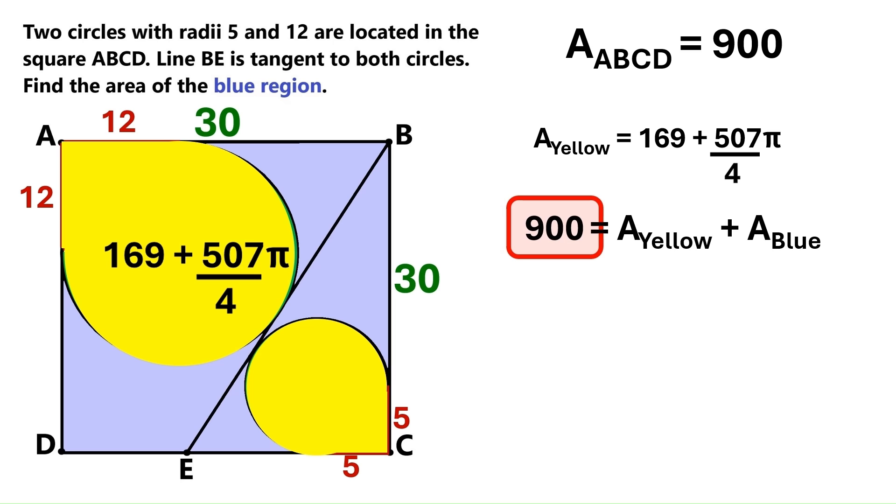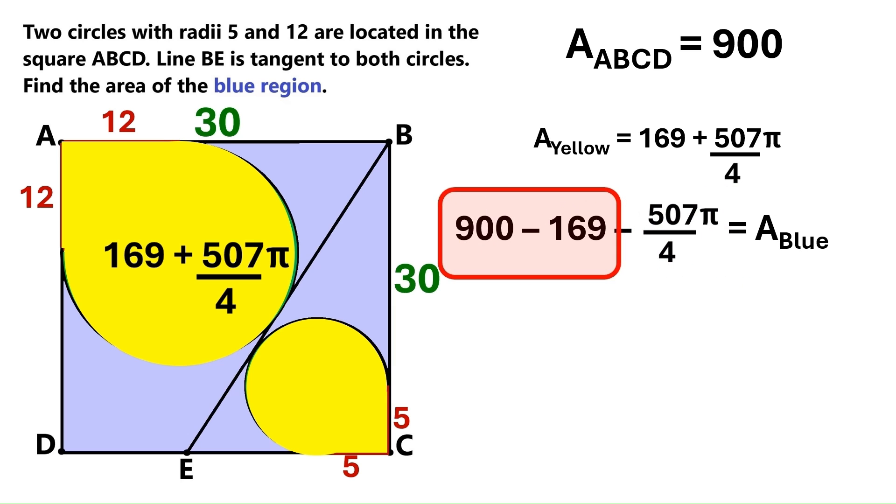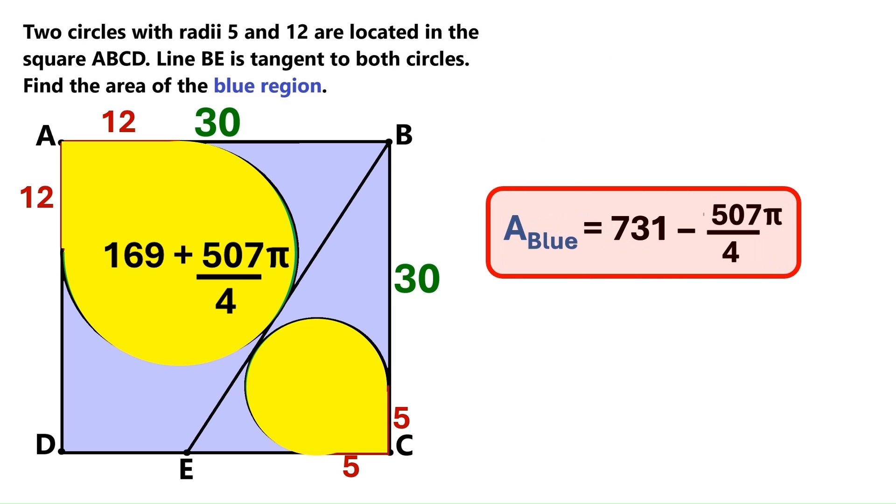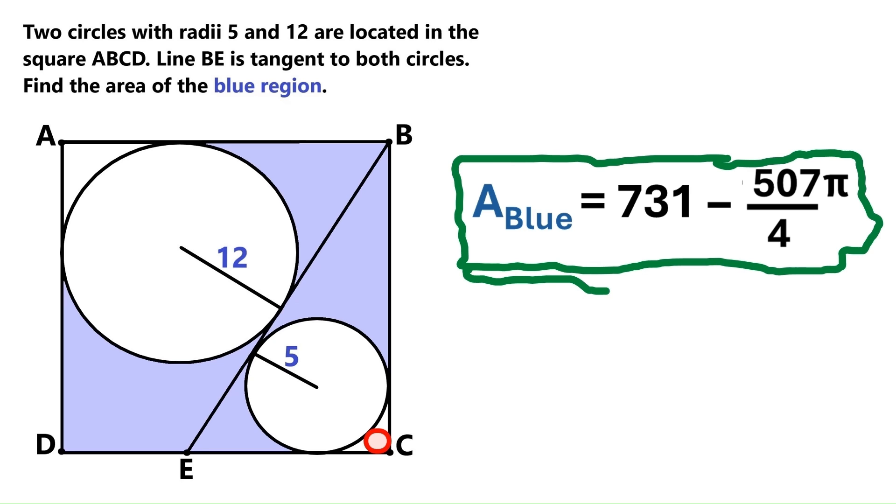And we also know that the yellow area is this ugly thing over here. So let's replace this with that as well. Next we do this subtraction and we get area blue equals 731 minus 507 pi over 4. So there we are people. We found the blue area that we wanted to find.